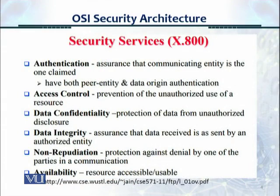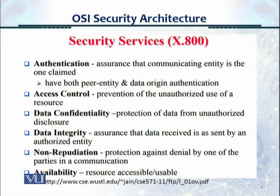Here we have a description of the six major security services. Authentication: assurance that the communicating entity is the one claimed, with two types of authentication. Access control: prevention of the unauthorized use of a resource. Data confidentiality: protection of data from unauthorized disclosure — keeping information secret. Data integrity: assurance that data received is as was sent by an authorized entity and has not been changed. Non-repudiation: protection against denial by any one of the parties in a communication, so that an entity cannot deny that it took an action. And availability: making resources accessible and usable.